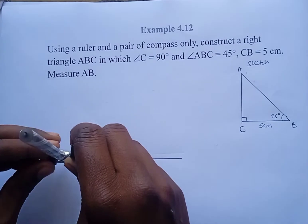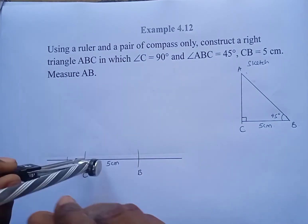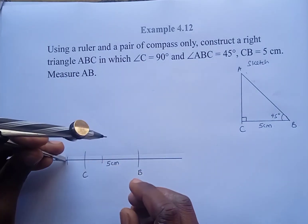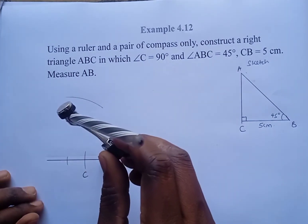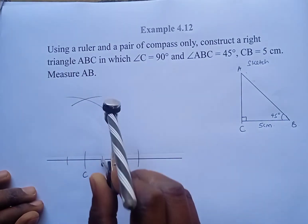So the next step is to construct 90 degrees at C. You can watch the construction of 90 degrees from a link in the description section below.